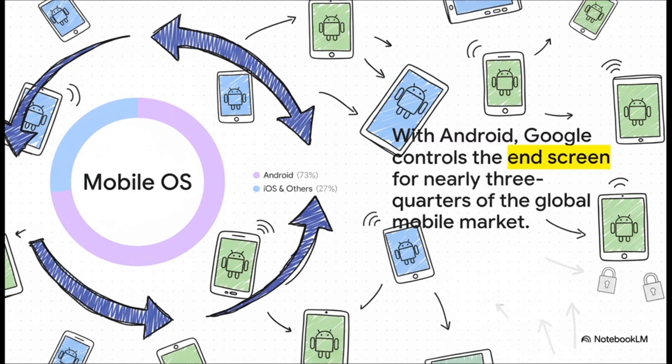Android controls nearly three quarters of the entire global operating system market. So when Google wants to push an update, it can instantly reach billions and billions of devices. Its competitors have to scrap and fight for every single app download.